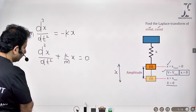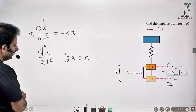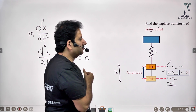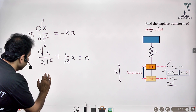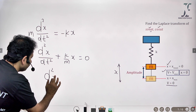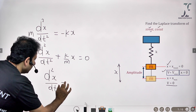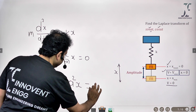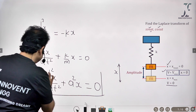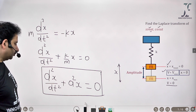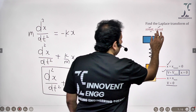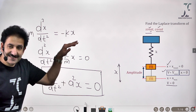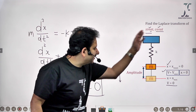You can designate k/m by any letter. I would like to designate it by letter A, because we are talking about the Laplace transform of sin(At) and cos(At). So the equation gets translated to d²x/dt² + A²x = 0. This is the differential equation whose time domain response could be either cos(At) or sin(At).